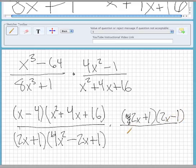And then finally, you can't factor the bottom here, so it's going to be x² plus 4x plus 16.